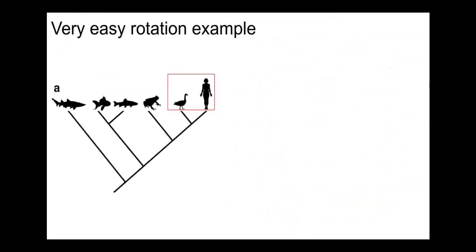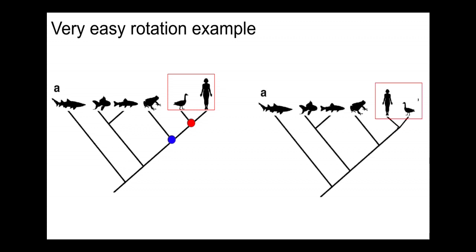Here's an easy example. We've got humans and geese here, there's a node there and a node there where the common ancestor was with frogs. We can easily just reverse the order of the human and the geese, and that doesn't change anything. Humans are still in a clade with geese, and then humans and geese are in a clade with frogs. All we've done is just changed who is on the outside.